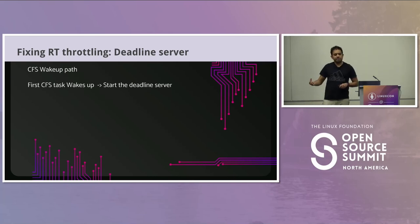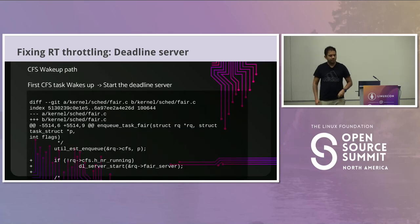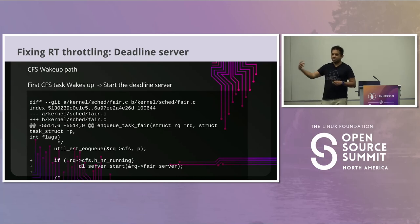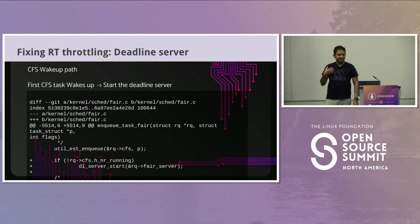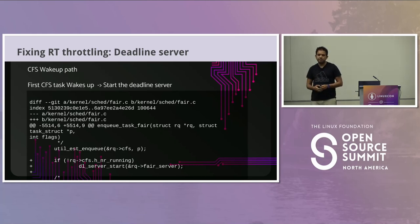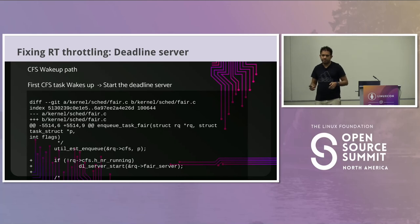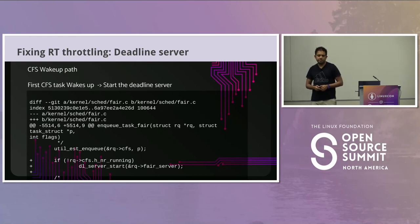To make this work, these patches have to modify the CFS wakeup path. The first CFS task that wakes up has to start the deadline server — essentially waking up this fake deadline task. The question was raised: will this not introduce delays? It's only done on the first task that wakes up. In the enqueue path, we already hold the run queue lock, so in my opinion it shouldn't matter, but we have to test it — we're still working on that.